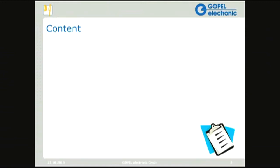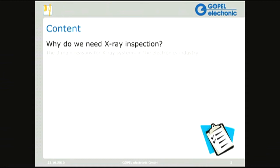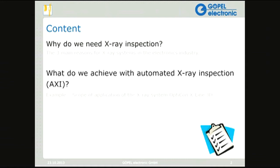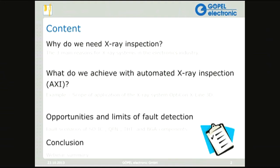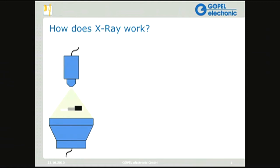This is a fairly short presentation and we will be discussing 3D X-ray, AXI, and AOI. The contents cover: why we need X-ray inspection and the three main reasons for it in the electronics industry; what we can achieve with automated X-ray inspection; the scope of the X-ray Opticon X-Line 3D; opportunities and limits of fault detection; and fault scenarios for SOIC, QFN, THT, and BGA.